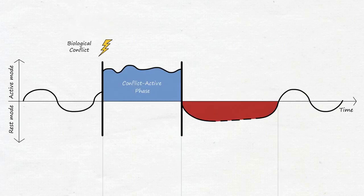A so-called conflict-active phase initiates the reaction to a biological conflict. The organism switches into alarm mode, no matter what time of day or night, to create the optimal conditions to overcome the conflicting situation as quickly as possible.